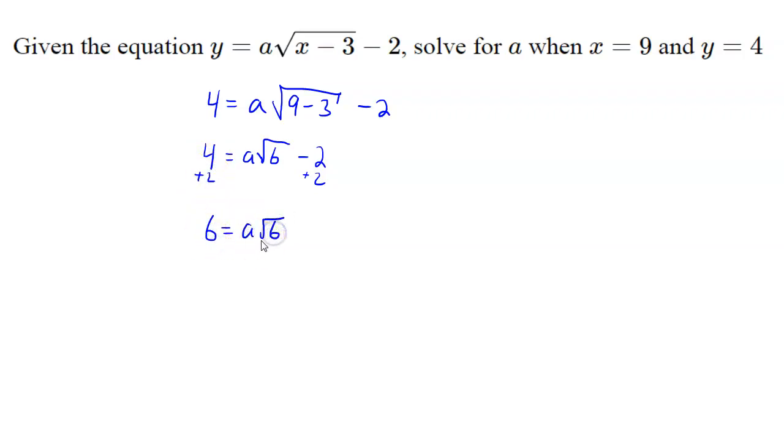a square root of 6. Now to finish solving for a, we need to divide by whatever's multiplying it, which in this case is the square root of 6. So we'll divide both sides by square root of 6. And we end up with a equals 6 over the square root of 6.